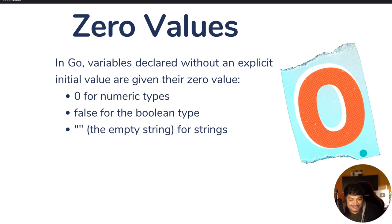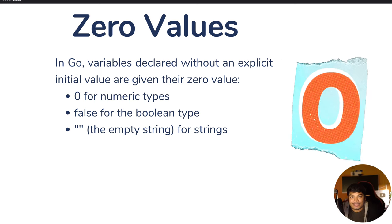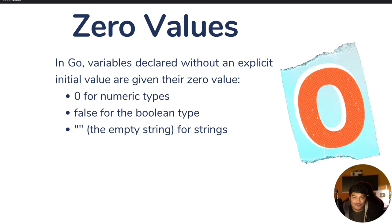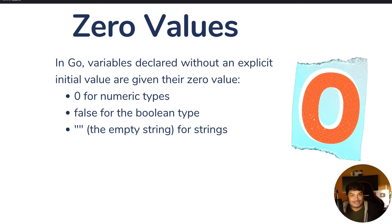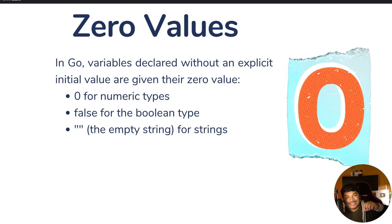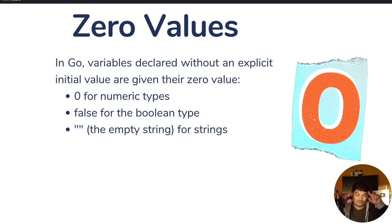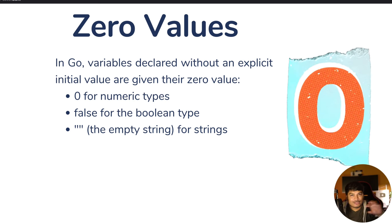Now let's learn about zero values in Go. Variables declared without any explicit initial value are given zero values. For any numeric variable, the default zero value is 0. If you define any variable as Boolean, the value will be false by default. And if you declare any string, the value will be an empty string. Let me quickly show a demo and then we'll proceed.